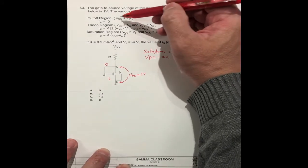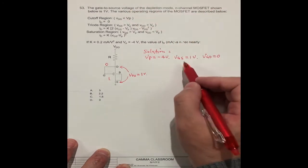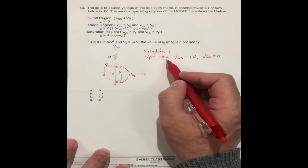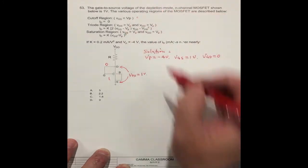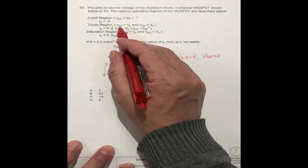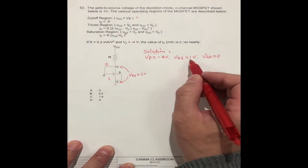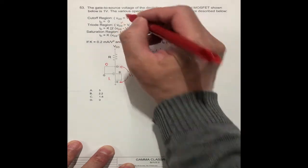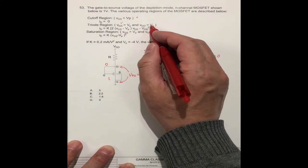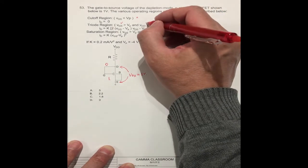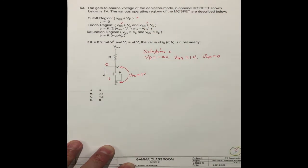So we can check which one. So GS is 1, less than VP. VP is minus 4. This does not meet these conditions. How about this one? VGS, VGS is 1 volt. VP is minus 4. This is okay. VGD, VGD is 0, VP is minus 4. This is okay.